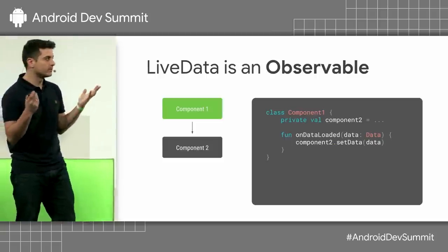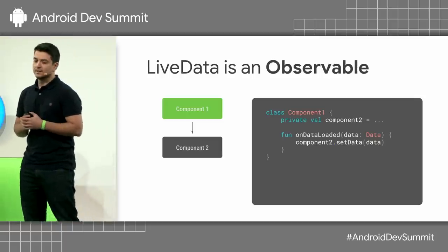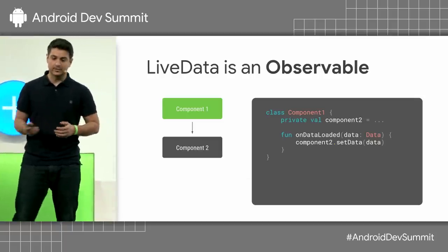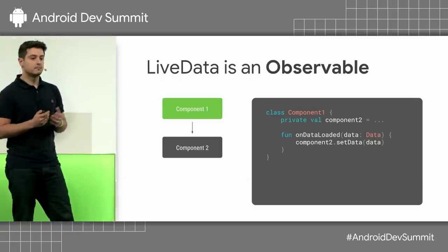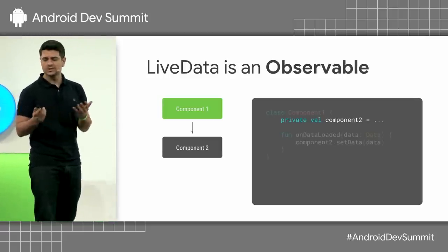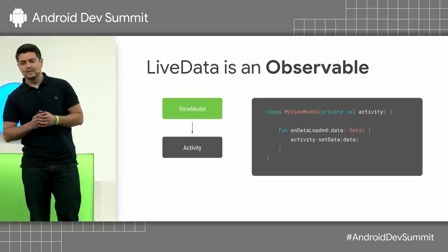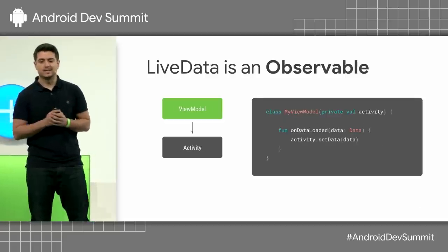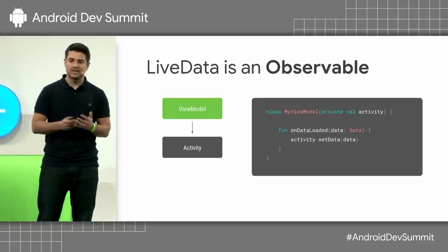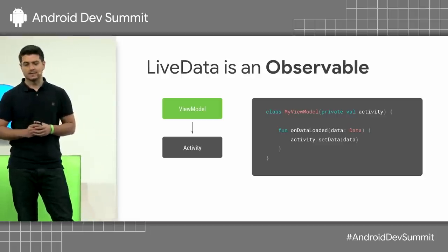In our object-oriented world, probably the easiest way of communicating one component with another is by having a reference from one object to another and just calling it directly. However, in Android, this might have some problems. As we all know, components in Android have different life cycles and different lifespans.